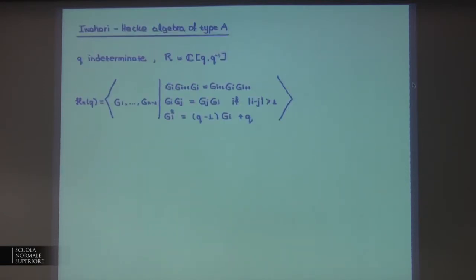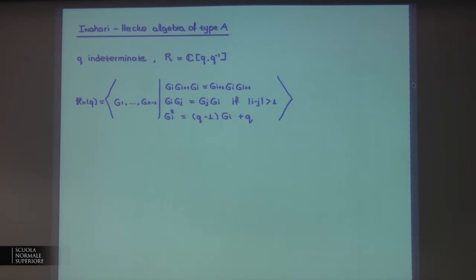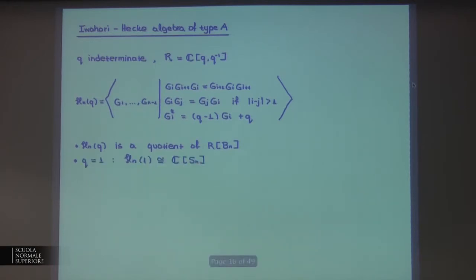I will start with the Iwahori-Hecke Algebra of type A and then move to the Yokonuma-Hecke Algebra. I have an indeterminate Q and take R to be a polynomial ring with coefficients in C. The Hecke Algebra of type A is generated by N-1 elements satisfying the same braid relations as before, plus an extra quadratic relation involving the parameter Q. This algebra is a quotient of the group algebra of the braid group by the quadratic relation. If we take Q equal to 1, the generators satisfy g^2 = 1 and we get a presentation of the symmetric group — so the Iwahori-Hecke Algebra is a deformation of the group algebra of the symmetric group.